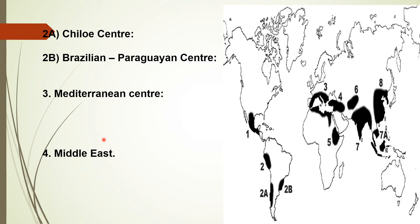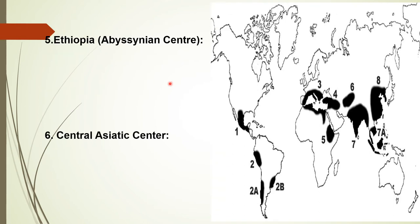The Middle East region includes the interior of Asia Minor, Iran, and the highlands of Turkmenistan. The region is the origin of grains and legumes like wheat, barley, Mediterranean oats, common oats, and lupin, forage plants like alfalfa and Persian clover, and fruits like fig, apple, pear, pomegranate, and cherry.